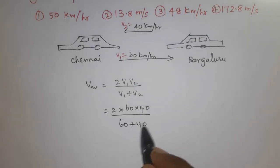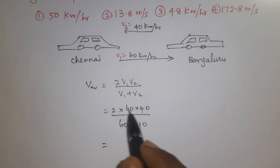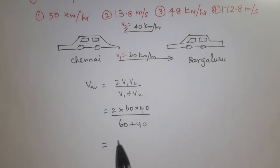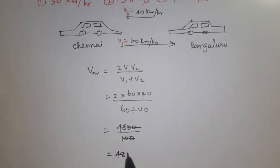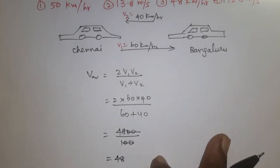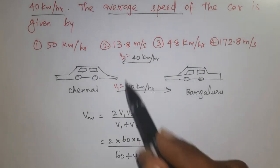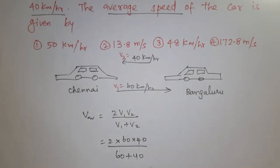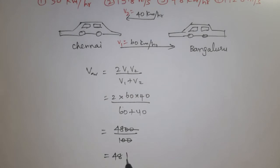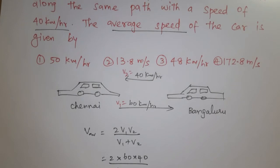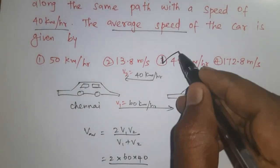Substituting: 2 × 60 × 40 divided by 60 plus 40 equals 4800 by 100, which gives 48. The unit of velocity is km per hour since the given speeds are in km per hour. So, the average speed is 48 km per hour. The correct option is the third one: 48 km per hour.